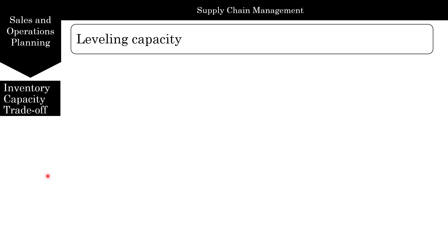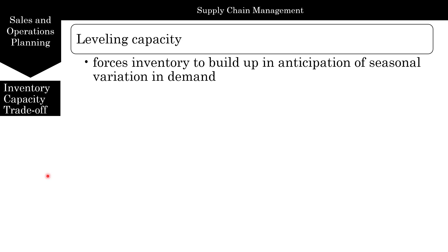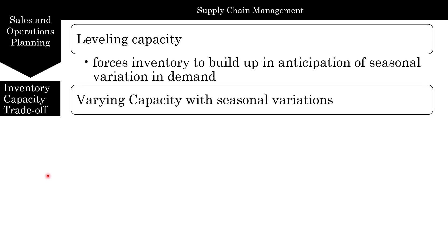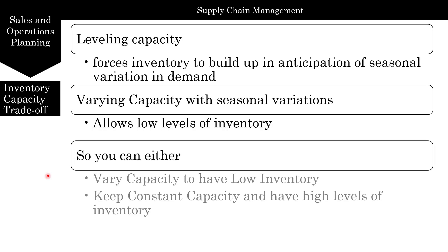You can have a level capacity — not changing your production — and have flat production, but this forces inventory to build up in anticipation of seasonal variation in demand. When demand starts growing, you use your inventory to satisfy it. Or you could vary capacity with seasonal variations, which allows for low inventory levels and just-in-time production. So either vary capacity and have low inventory, or keep constant capacity and have high levels of inventory.